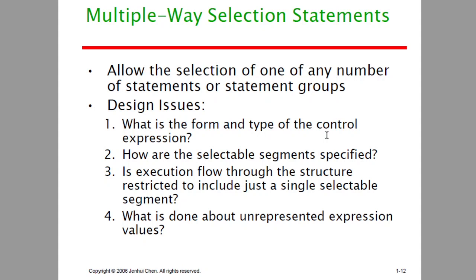For multiple-way selection statements, we can use statement groups — picking one thing to do from multiple options. There are four design issues: first, what is the form and type of the control expression; second, how do we specify the selectable segments; third, the flow of execution through the structure; and fourth, how do we handle expression values that are not represented.